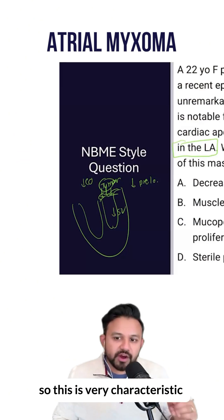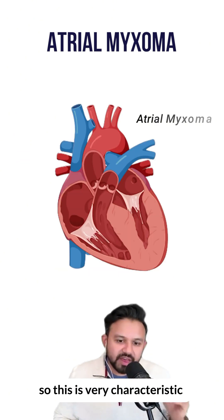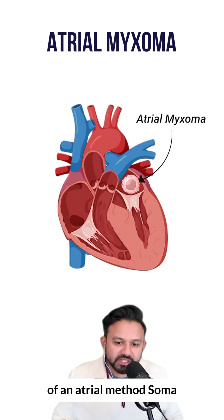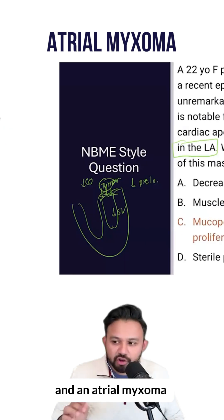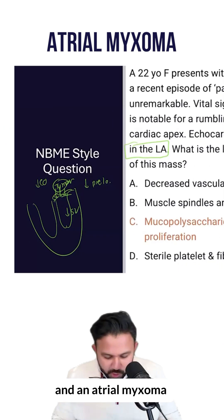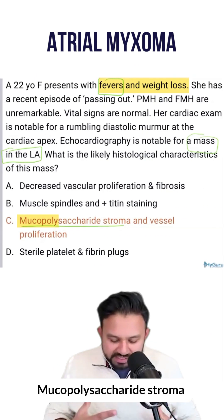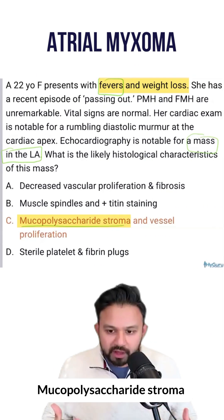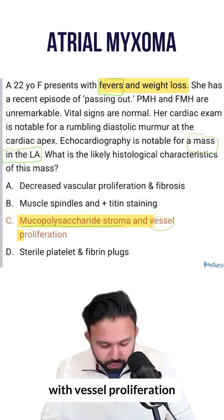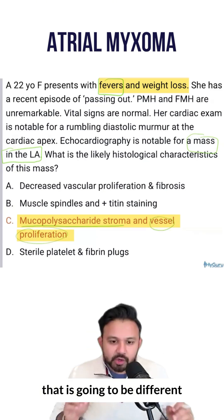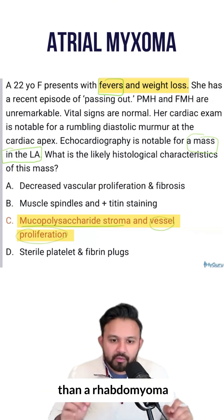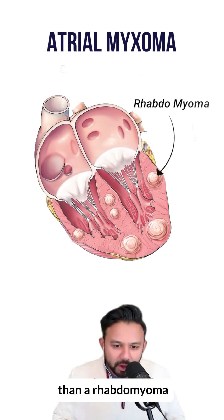This is very characteristic of an atrial myxoma. An atrial myxoma is going to have a mucopolysaccharide stroma with vessel proliferation, which is going to be different than a rhabdomyoma.